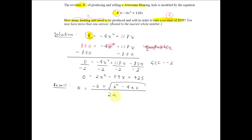Now looking at our equation, we can clearly see that a is 2, b is negative 59, and c is the constant term 425.